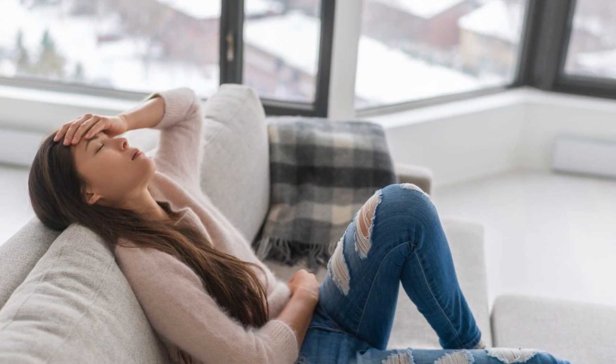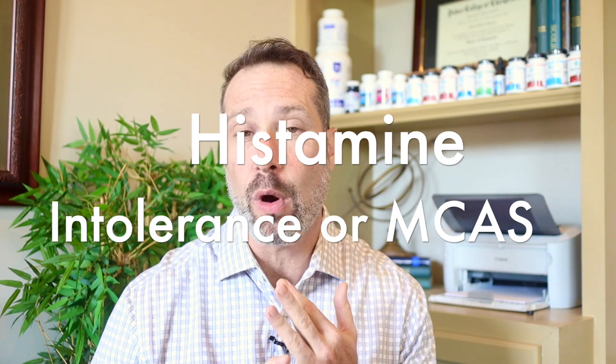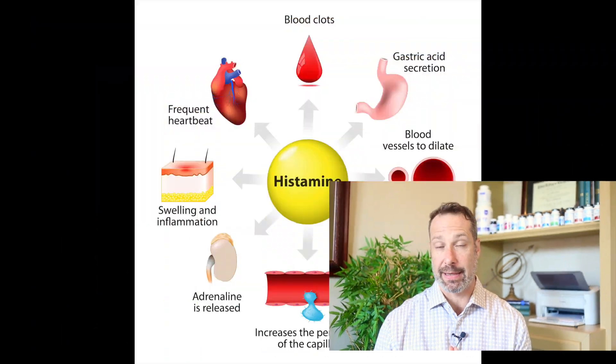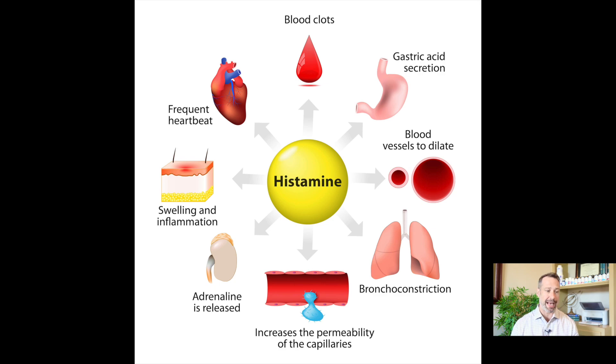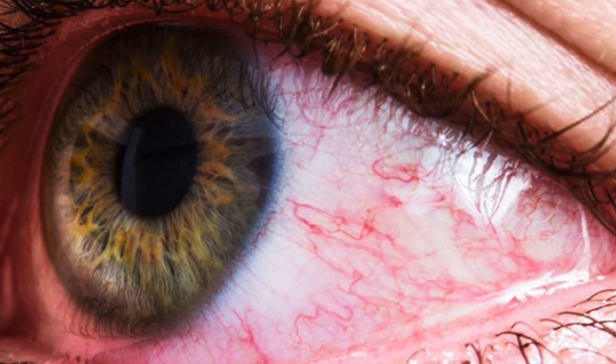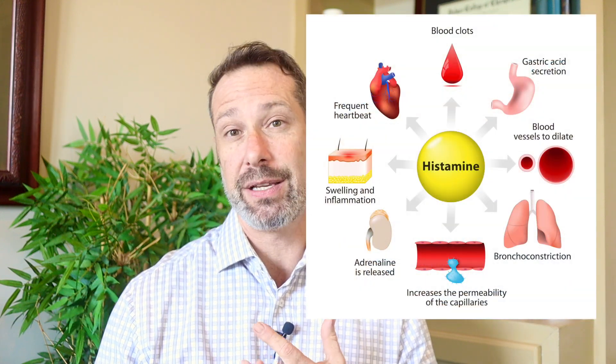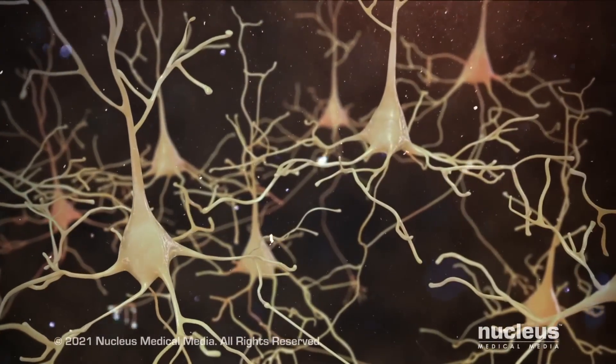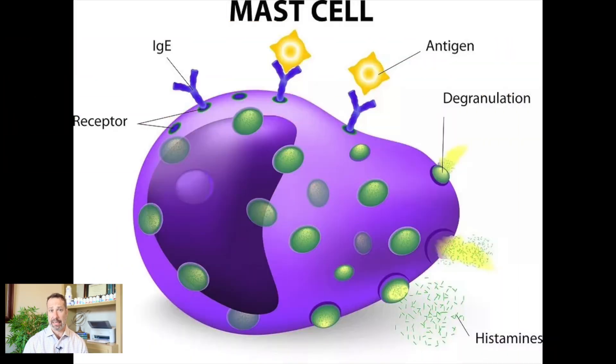Migraines are much more than just headaches — they involve throbbing pain, sensitivity to light, nausea, and can significantly affect quality of life. One key factor linked to migraines is having too much histamine. Histamine is a biogenic amine involved in many different things. You're probably familiar with the person who has allergies and their eyes are all puffy and their nose is running, but histamine is also involved in our immune response, regulates stomach acid, and plays a very important role in neurotransmission — how cells communicate back and forth with one another.